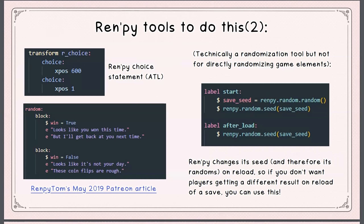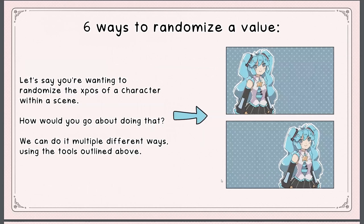There's also this chunk of code which is technically a randomization tool, but it's not for directly randomizing game elements. Ren'Py changes its seed and therefore its randoms on reload, so if you don't want people save-scumming, you can stop people from getting a different result when they reload a save by using this.